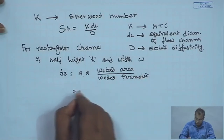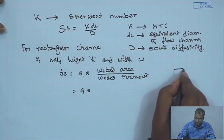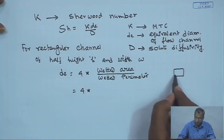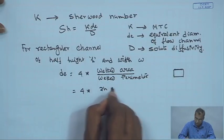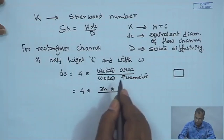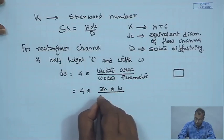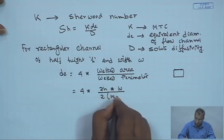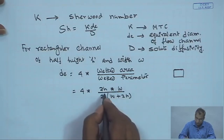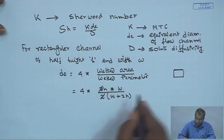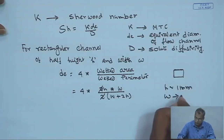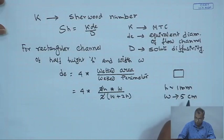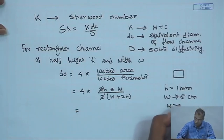For a rectangular channel of half-height h and width w, the equivalent diameter is estimated as d_e = 4 × (wetted area)/(wetted perimeter) = 4·(2h·w)/[2(w + 2h)]. The 2's cancel. Since h is in the order of millimeters and w in the order of centimeters, w is much greater than h, so 2h is negligible compared to w.